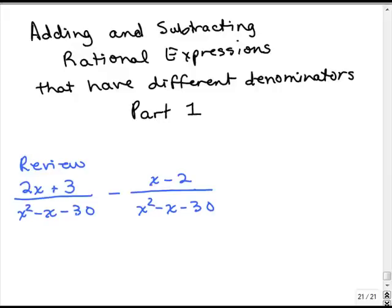So here's an example where we have a subtraction problem and we have the same denominator. Remember what we do is we subtract the numerators. With this minus sign, remember you're going to subtract this whole numerator. So we've got 2x plus 3 and I'm going to subtract x minus 2. So that'll be a minus x and a plus 2 once you distribute your minus sign, and you write the denominator down once.